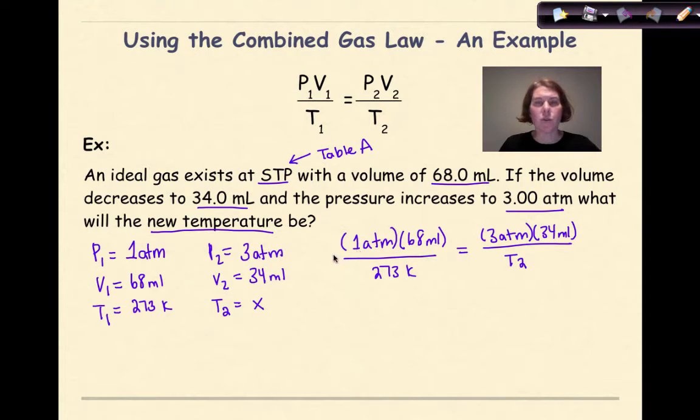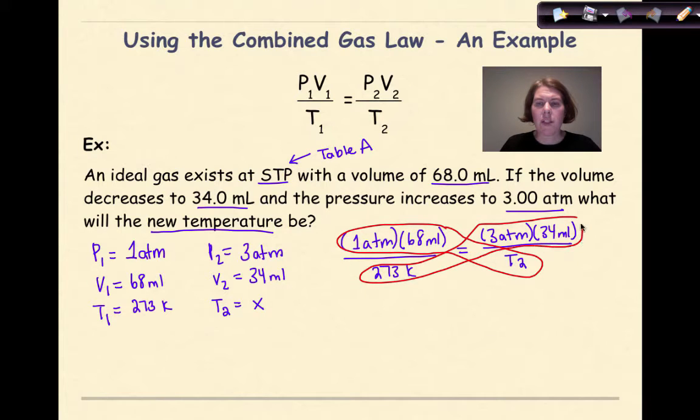Now what I want to do here is cross multiply. So I'm going to be multiplying these two variables together plus the T2, and then I'm going to multiply these three numbers together and set them equal to each other. So 1 times 68 times T2 is going to give me 68T2, the variable that I'm looking for. And 3 times 34 times 273 is going to give me 27,846. Then I'm going to divide both sides by 68, and my final T2 temperature will be 410 Kelvin. And that is my final temperature.